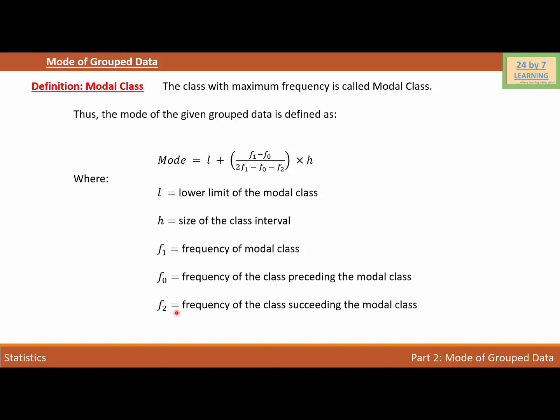The difference between the lower and the upper is the size, and the frequency that we have for the modal class is known as the frequency f1, and f0 is before f1 and f2 is after f1.